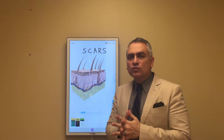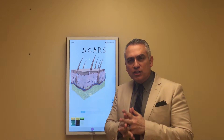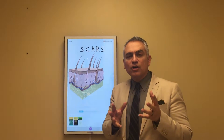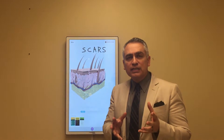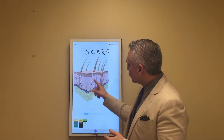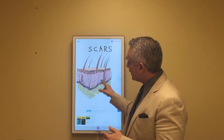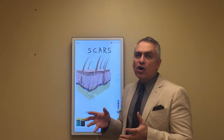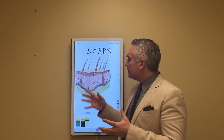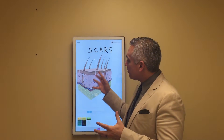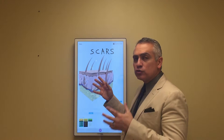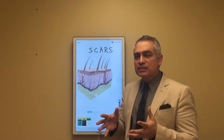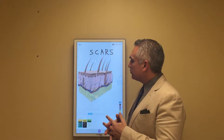We've had several questions about scars, so we're going to generally review what is a scar and the different kinds of scars. This is an animation of normal skin. Scars are some form of abnormal production — too much or too little of the collagen in the skin — to cause a deformity.